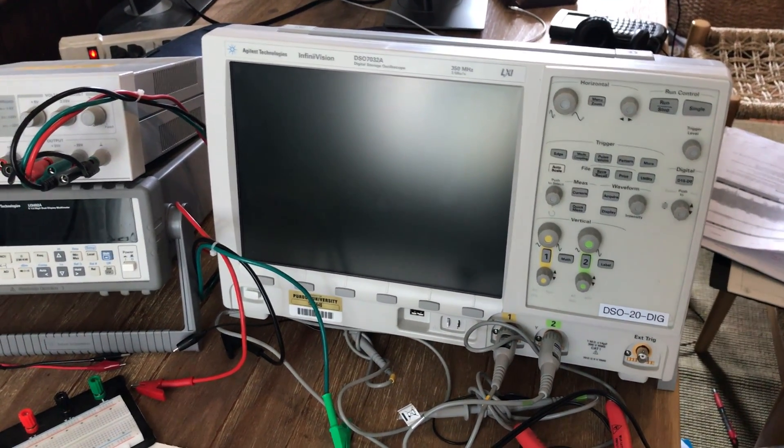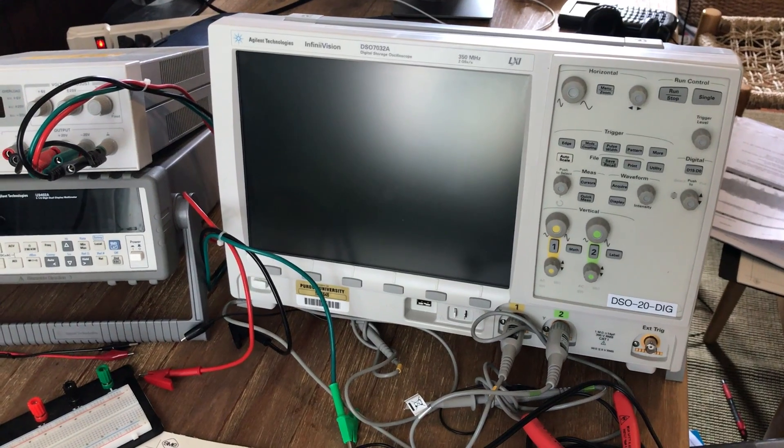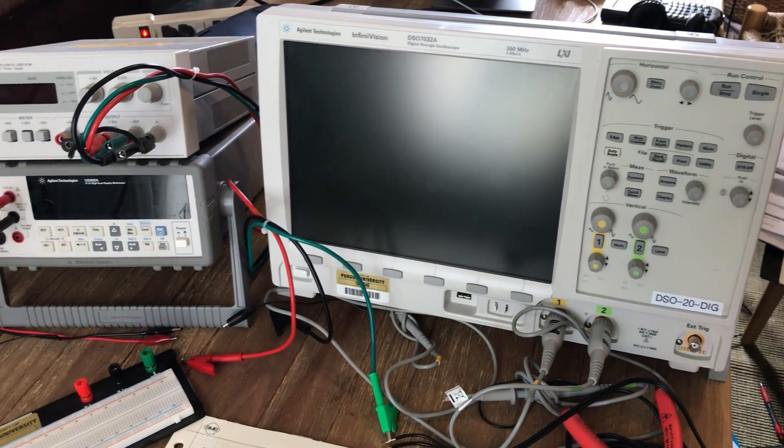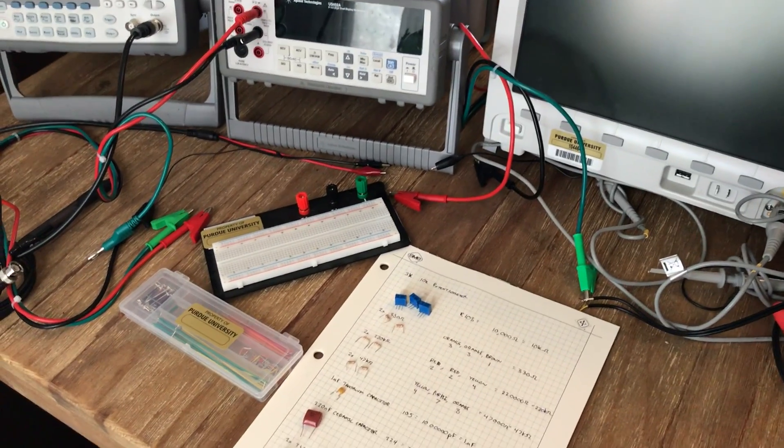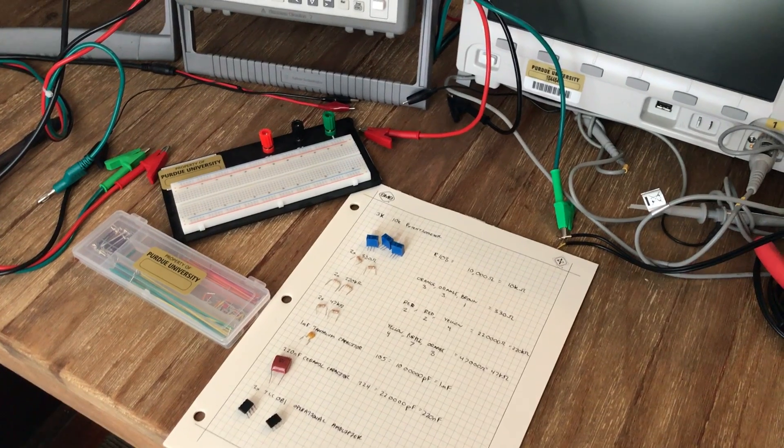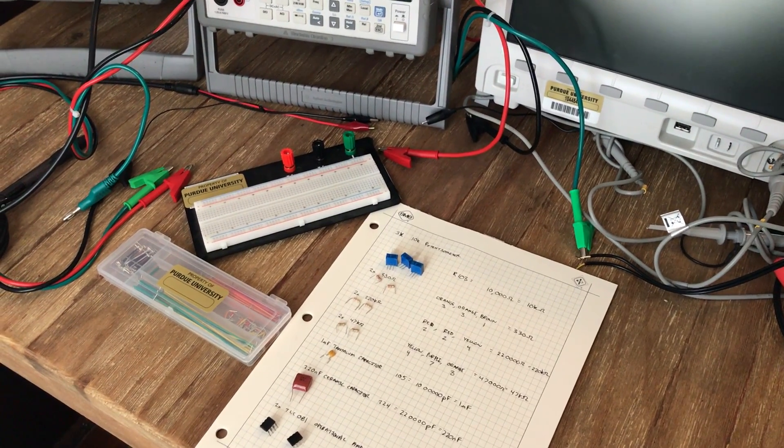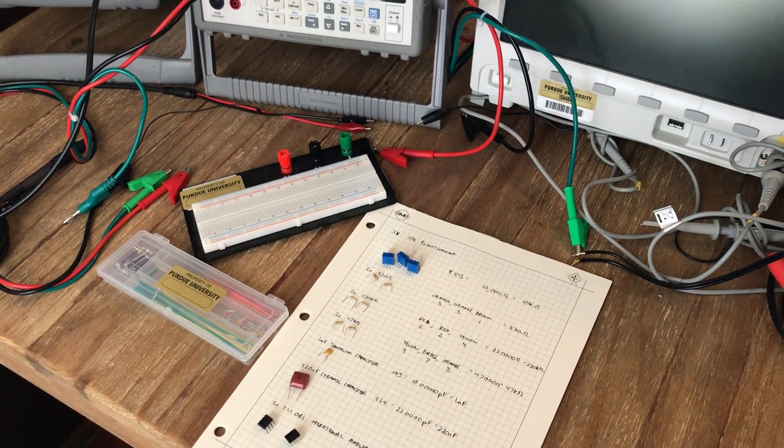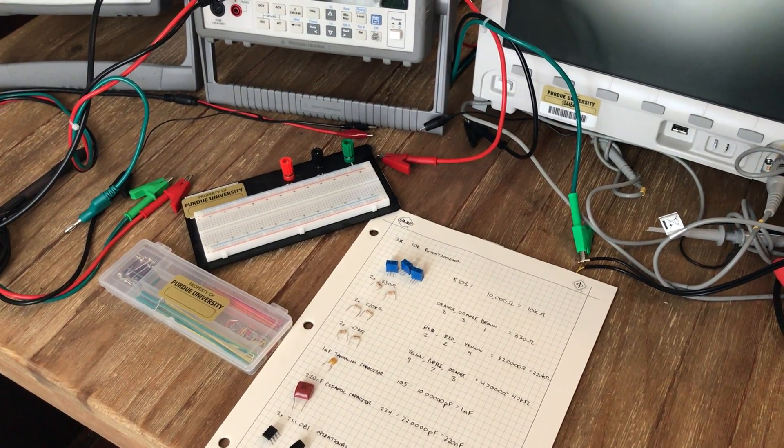So all the equipment that I need to build the circuit is already prepped and ready to go, which is how you want to start building complex circuits like this. Have all your equipment ready, organized, and set aside so that you know exactly where the parts that you need for your circuit are.